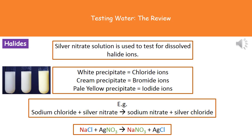The second chemical that we'll be testing for are the halides. The way we test for halide ions is by using silver nitrate solution. The color of the precipitate generated in the tube will be determined by which halogen is present. A white precipitate tells us we have chloride ions, a cream precipitate indicates bromide ions, and a pale yellow precipitate indicates iodide ions. We need to remember these three colors: chloride ions are white, bromide ions are cream, and iodide ions are pale yellow precipitates.